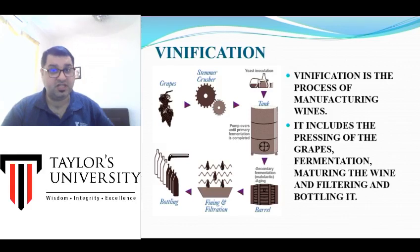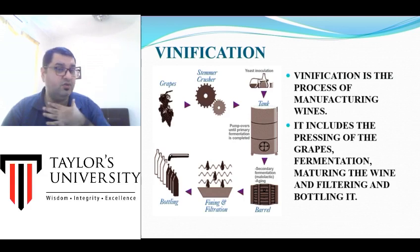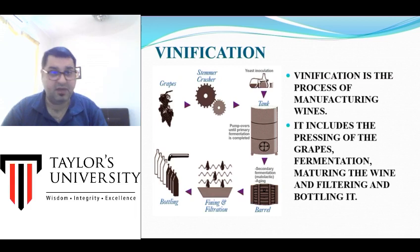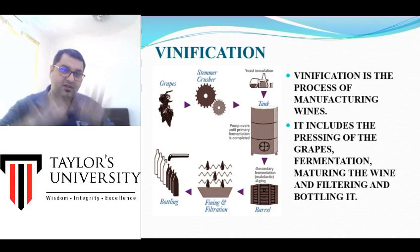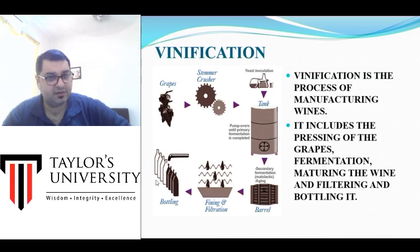Vinification — the process of making wine — also matters. Using different equipment produces different flavors. Using wooden barrels versus metal or cement barrels for fermentation produces different results. Crushing grapes by machine versus by human feet also produces slightly different products. Aging the wine for a few months versus bottling immediately after fermentation also affects flavor. All these aspects of vinification create different kinds of flavors.